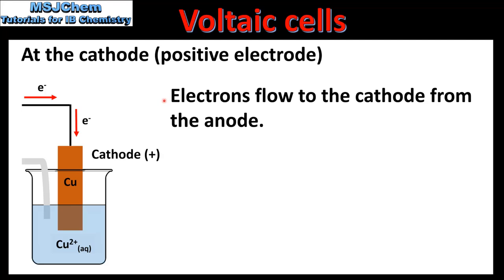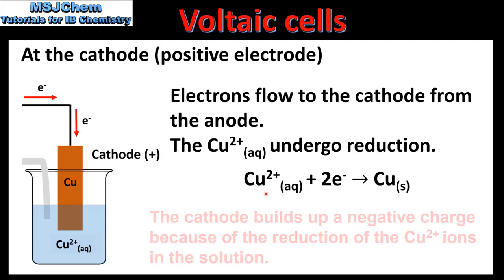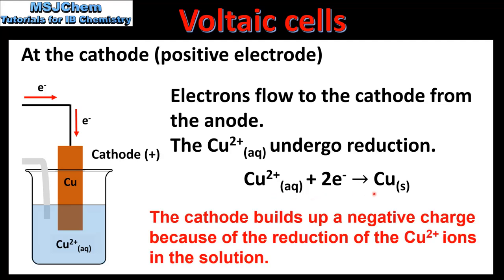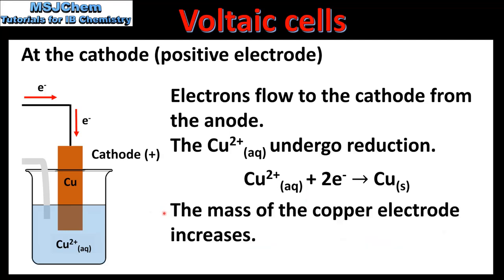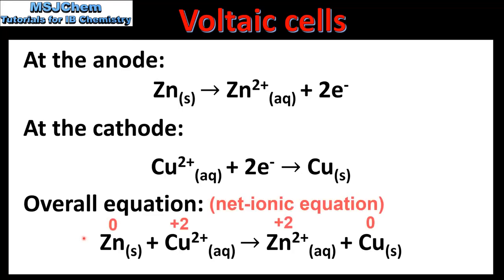The electrons flow to the cathode from the anode. At the cathode the copper ions undergo reduction — here we can see the half equation: the aqueous copper ions gain electrons to form solid copper metal. This causes a build up of negative charge at the cathode, and the reduction of the aqueous copper ions also causes the mass of the copper electrode to increase. To summarize: at the anode we have zinc metal undergoing oxidation, and at the cathode we have copper ions undergoing reduction. Here we have the overall equation for the reaction. If we assign oxidation states we can see that the zinc metal is being oxidized and the copper ions are being reduced.